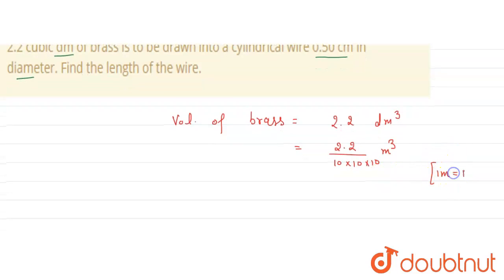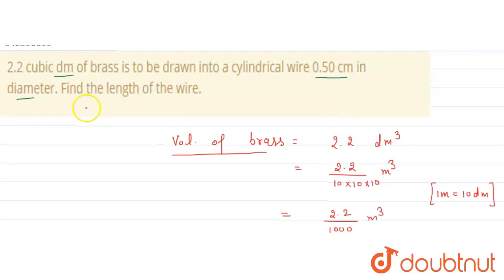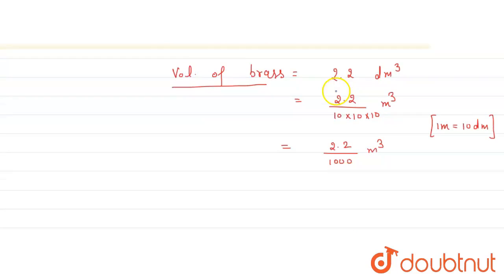So this becomes 2.2 upon thousand meter cube. This is the volume of brass. What is the diameter of cylindrical wire?